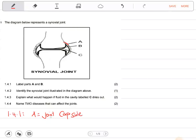What is B? B here, this part, is cartilage. Let's go to question 1.4.2.